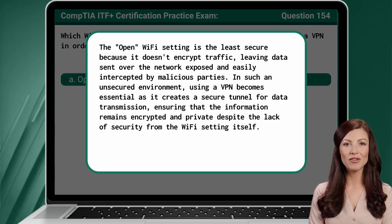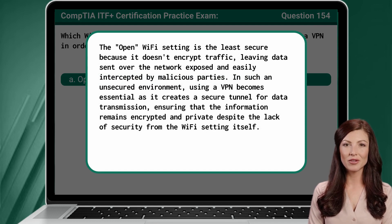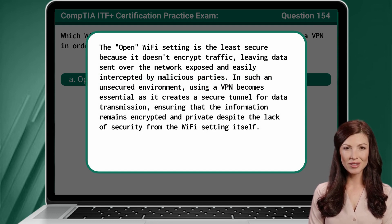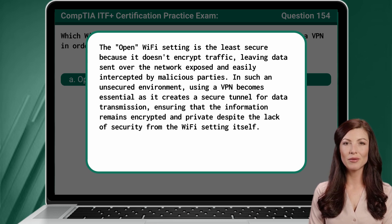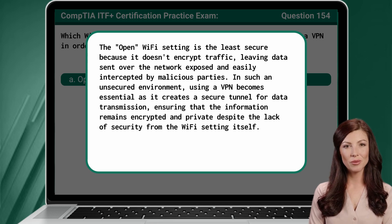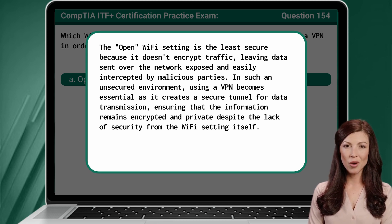The open Wi-Fi setting is the least secure because it doesn't encrypt traffic, leaving data sent over the network exposed and easily intercepted by malicious parties. In such an unsecured environment, using a VPN becomes essential as it creates a secure tunnel for data transmission, ensuring that the information remains encrypted and private despite the lack of security from the Wi-Fi setting itself.